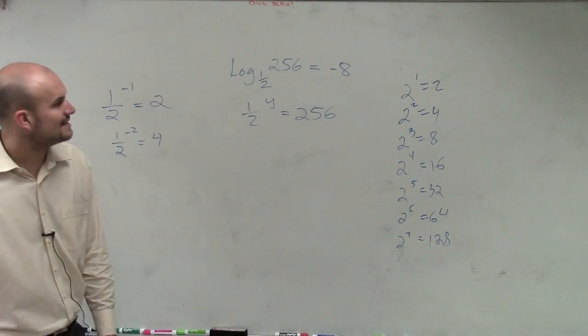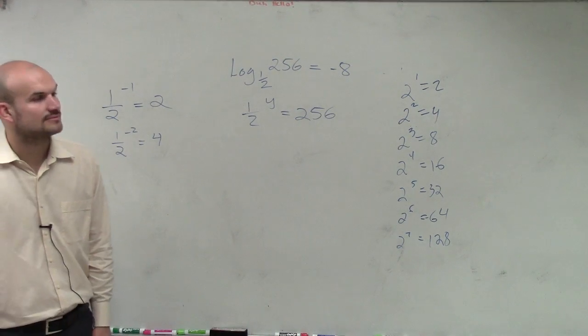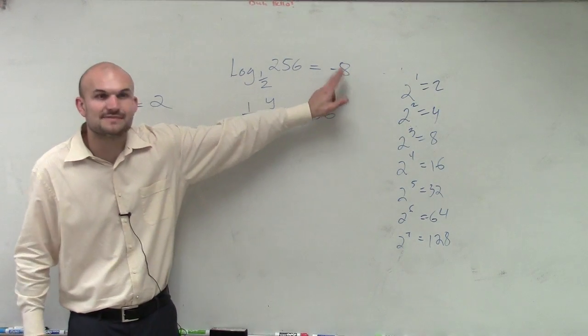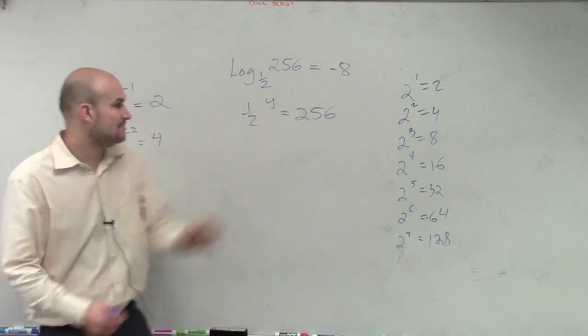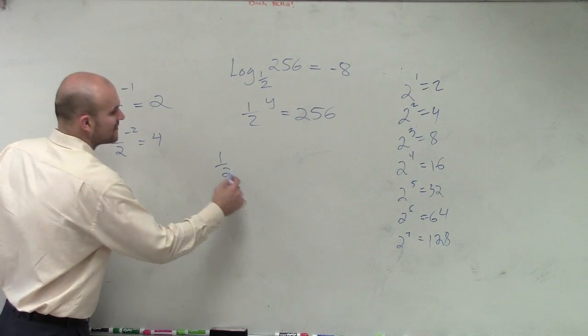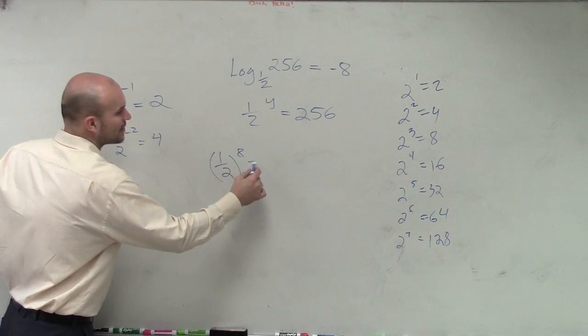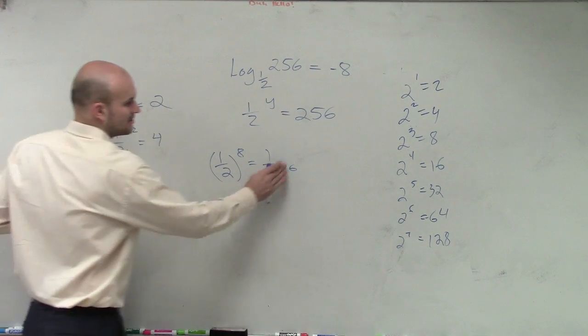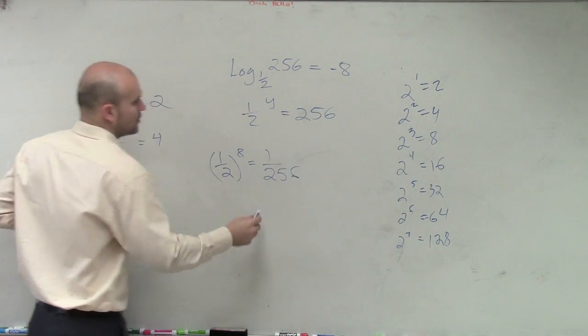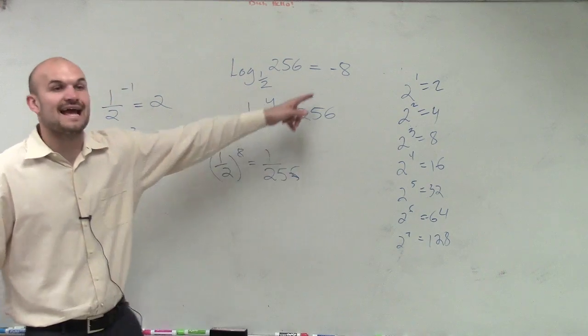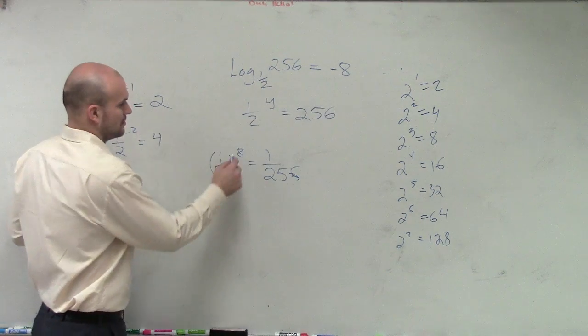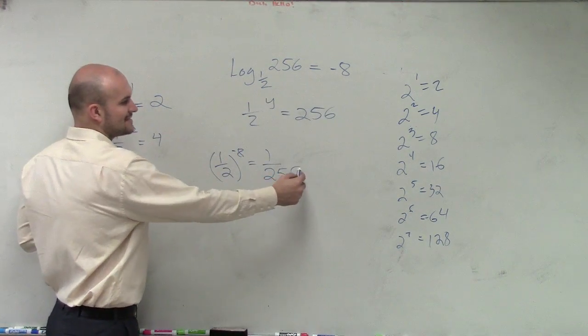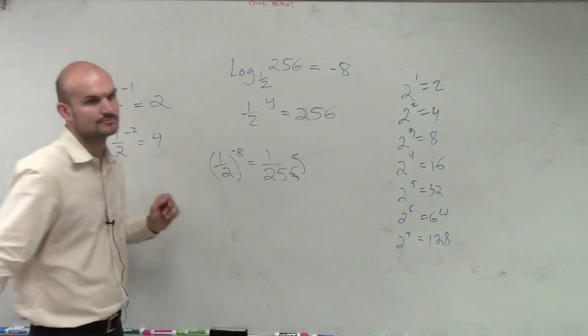2 to the eighth is 256, but make sure, it has to be negative 8, because 1/2 raised to the eighth power equals 1 over 256, right? You've got to make sure that you raise it to the negative power, so that's negative, so then that comes up top. Does that make sense?